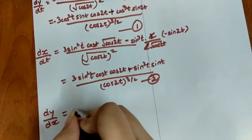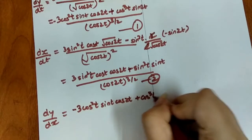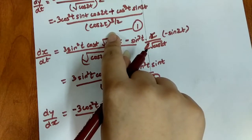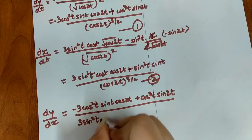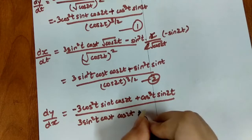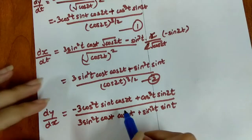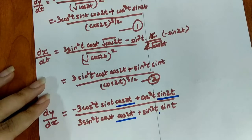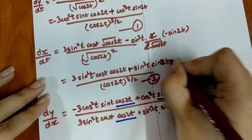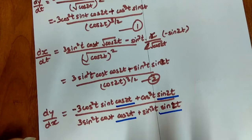Simplifying dy/dx: numerator is −3cos²t sin t cos 2t + cos³t sin 2t, denominator is 3sin²t cos t cos 2t + sin³t sin 2t. Factor out cos²t sin t from numerator and sin²t cos t from denominator. After cancellation, we get (cos t / sin t) × (expression with cos 2t and sin²t) / (expression with cos 2t and cos²t). Now expand cos 2t using the formula cos 2t = 1 − 2sin²t in the numerator and cos 2t = 2cos²t − 1 in the denominator.